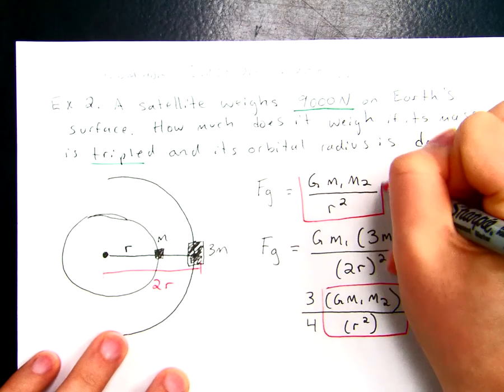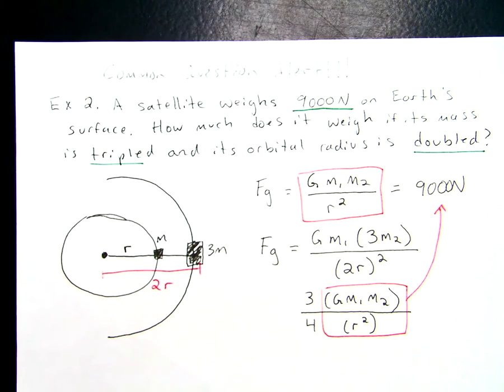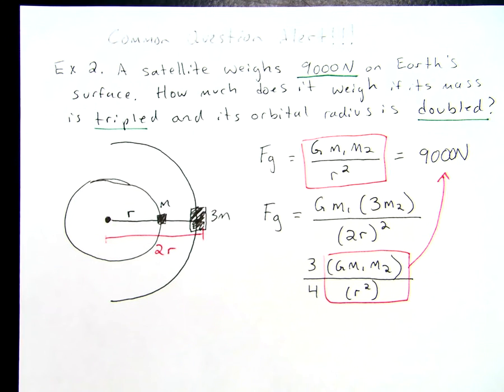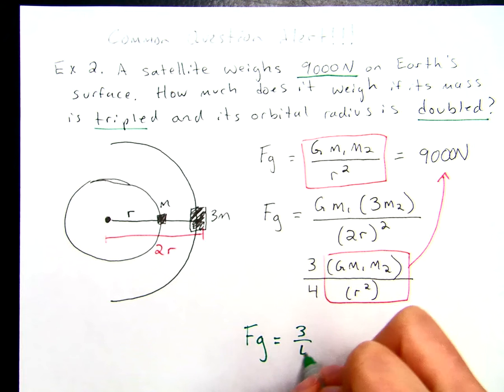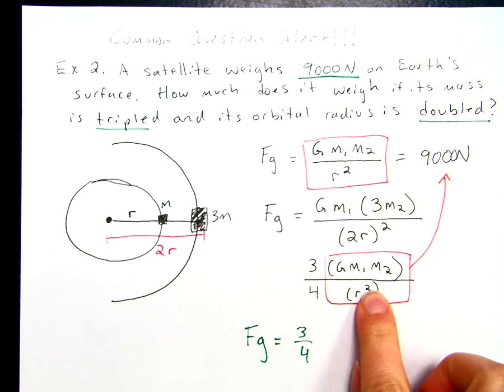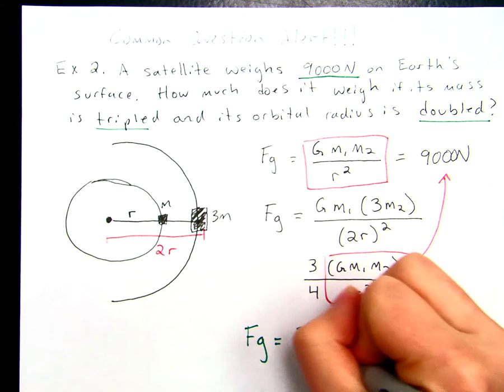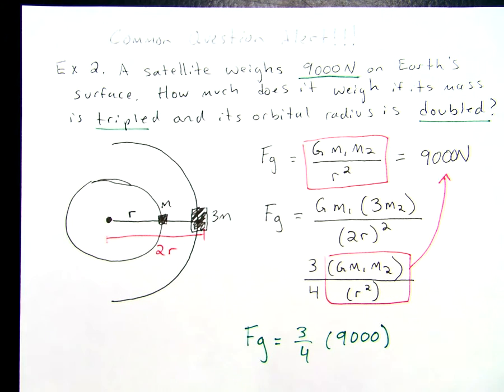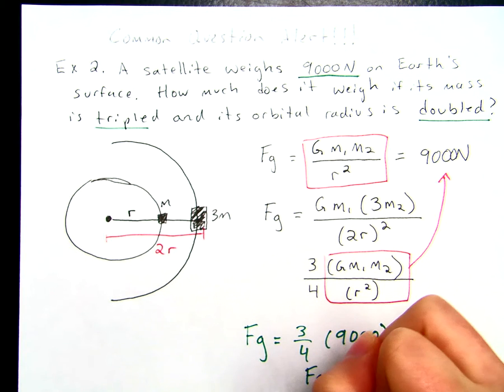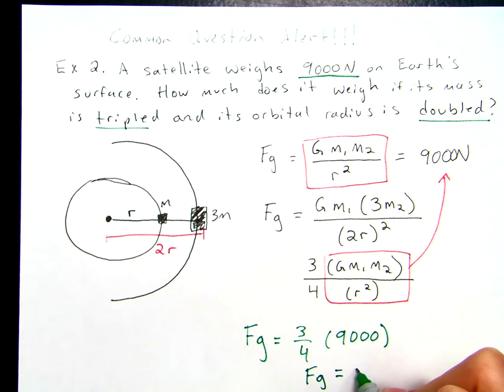What is this equal to? This whole thing here is equal to that 9,000, because look, it's the same thing that's here. When I go to look at my force of gravity, I see that I can do 3 fourths times 9,000. From there, I can plug it into the calculator. 9,000 times 3 fourths, and I get that my satellite will now weigh 6,750 newtons.